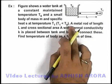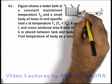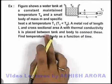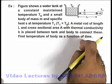It is given that a metal rod of length L and cross sectional area A, its cross sectional area given to us is A, with thermal conductivity k is placed between the tank and body to connect these. We are required to find the temperature of body as a function of time.